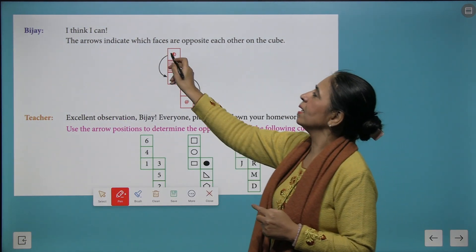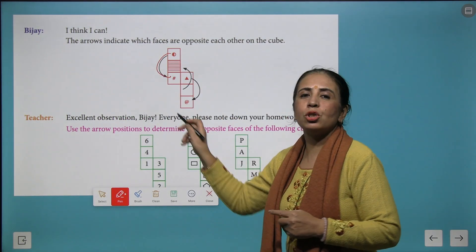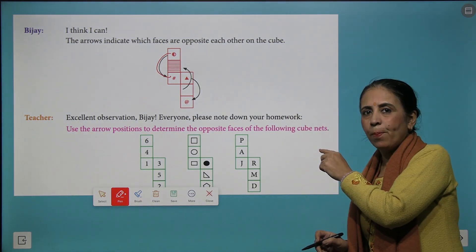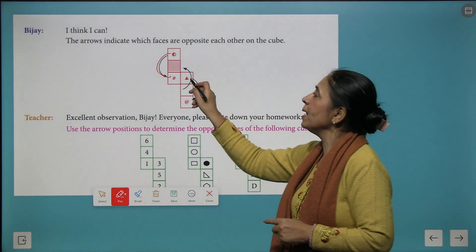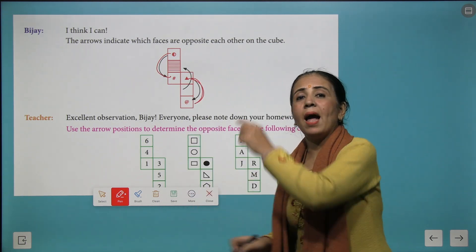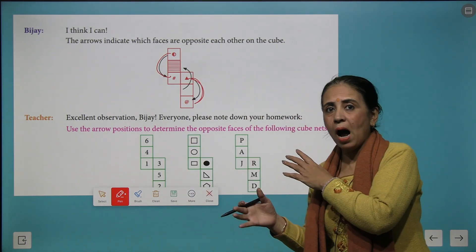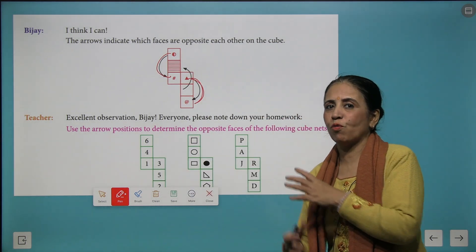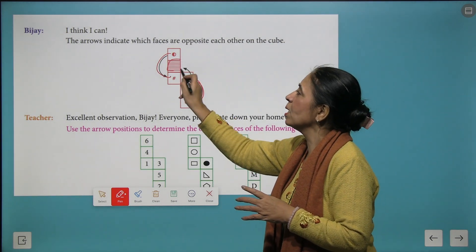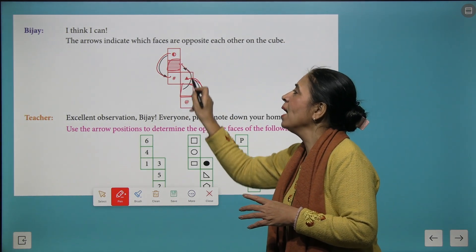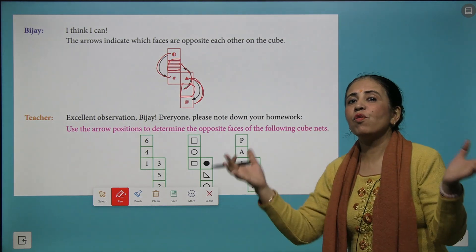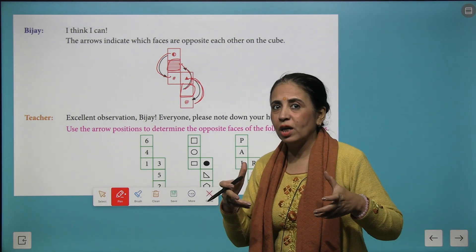So he tells that the top and the bottom over here are the opposite faces. Similarly, this triangle and at the right again are the opposite faces of the cube and this middle one and this middle one are another pair of opposite faces of the cube.